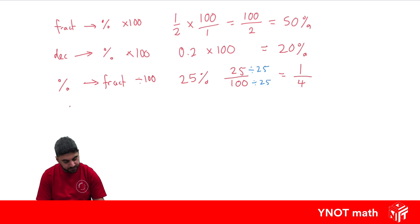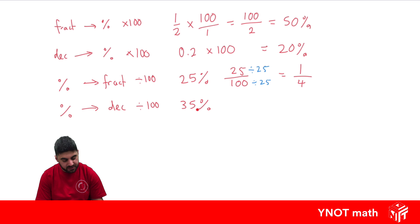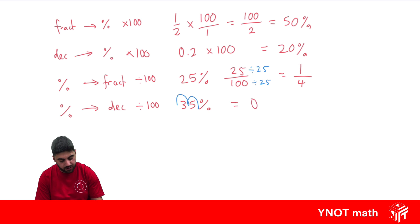Let's look at percentage to a decimal. Again, we're going to be dividing by 100. Let's look at 35%. To do this dividing by 100, we just need to take our decimal place — it's here because it's a whole number — and move it two places to the left. Moving once gives us 3.5, and again gives us 0.35. So we get 0.35 as a decimal.